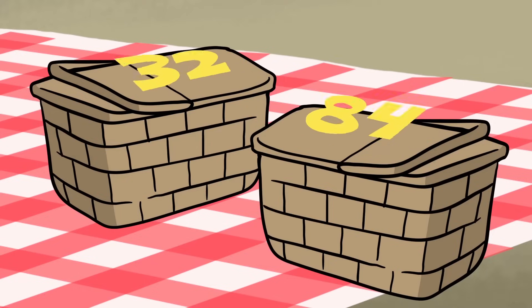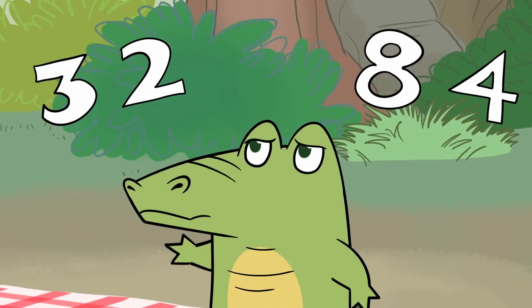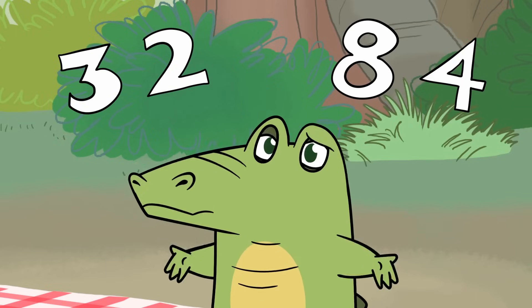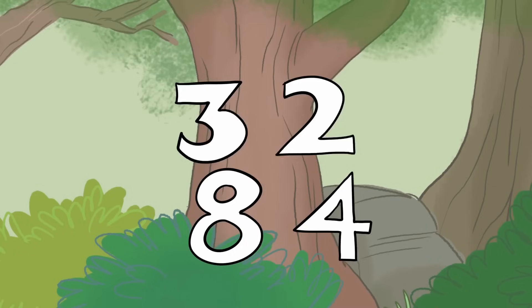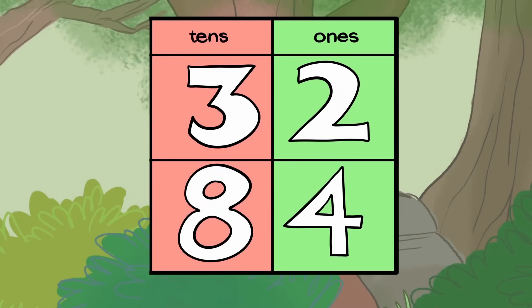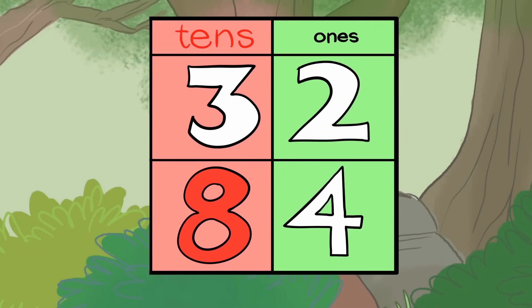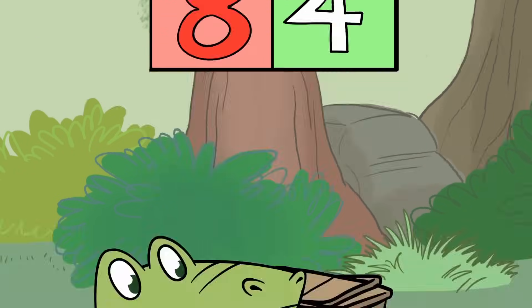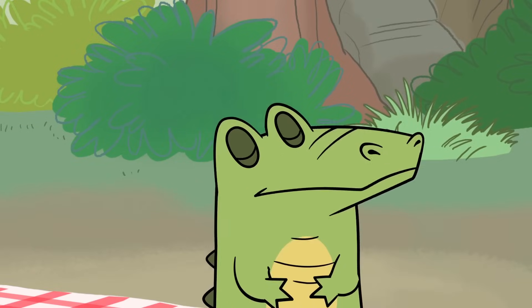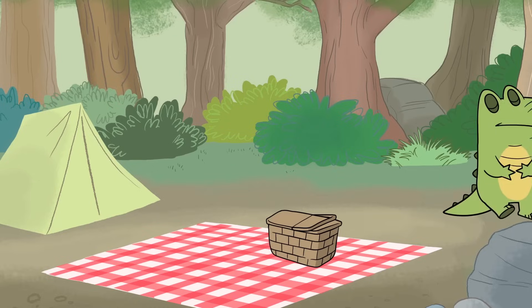32 and 84 — the Gator eats the one that's worth more. He looks at the place values from left to right. It's the greatest tens place, so he takes a big bite.